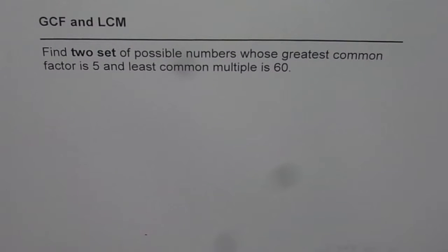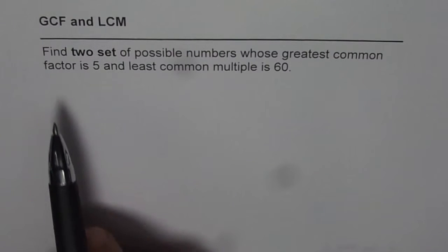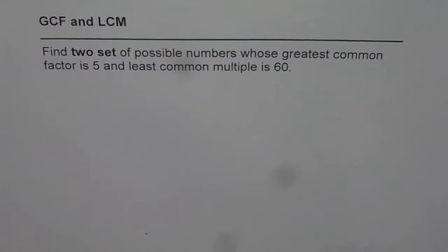I'm Amanal Kumar and here is a test practice question for you relating greatest common factor and least common multiple. Find two sets of possible numbers whose greatest common factor is 5 and least common multiple is 60.